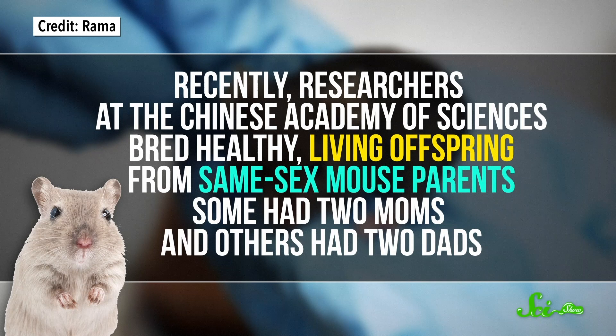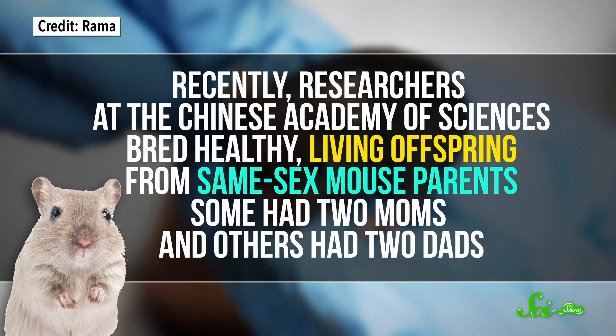It's tempting to think of reproduction in mammals as a simple process. You're probably used to the idea of a sperm and an egg cell getting together, and after some time, a baby pops out. But you know us here at SciShow, there's always a twist. Recently, researchers at the Chinese Academy of Sciences bred healthy, living offspring from same-sex mouse parents. Some had two moms, and others had two dads. The research was published in the journal Cell Stem Cell last week, and it questioned some of the long-established beliefs about how mammals can reproduce.